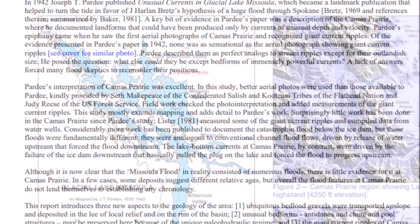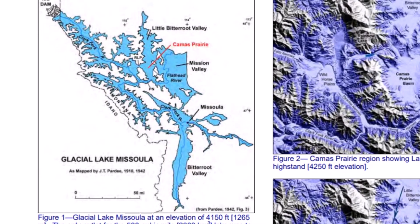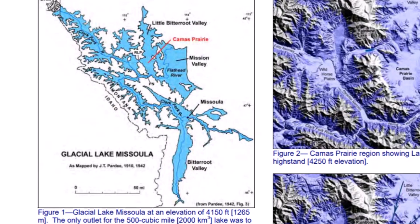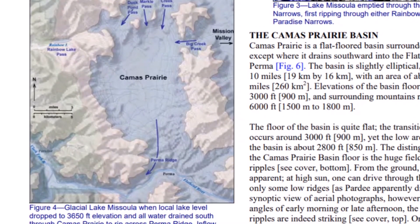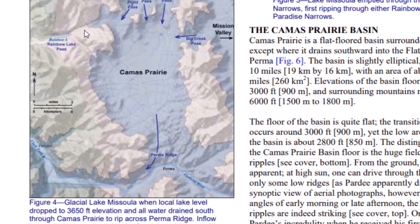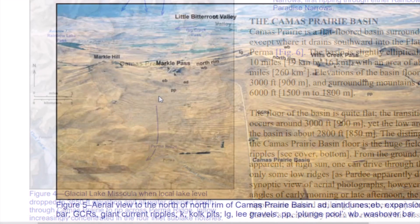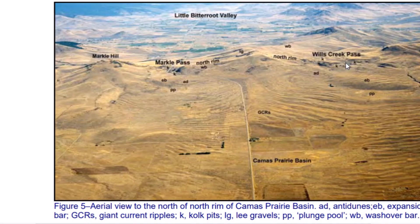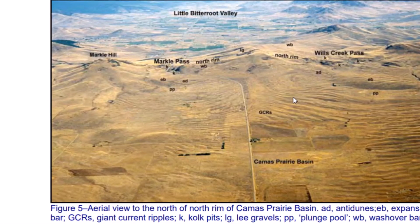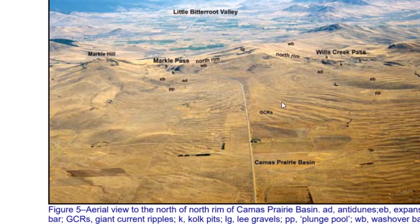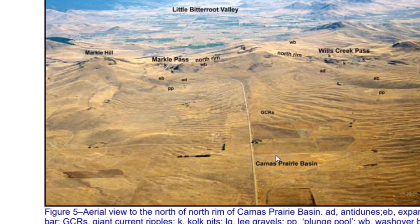In a few cases some deposits suggest different relative ages, but overall the flood features of Camas Prairie do not lend themselves to establishing any chronology. Could it have been one massive event? That's what I wonder. Here is a proposed ancient map of Glacial Lake Missoula — Camas Prairie is right down here, just a tiny part of it. Here is the area of Camas Prairie covered by ancient flood waters, Rainbow Lake and that outlet, and the outlet over Perma Ridge. Here is Markle Pass and Wills Creek Pass.